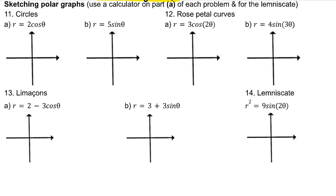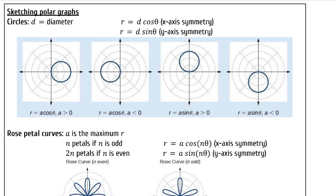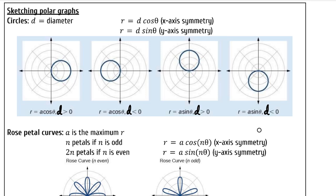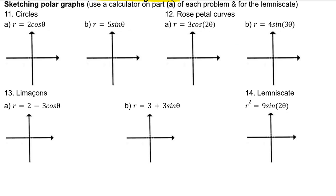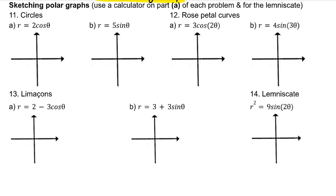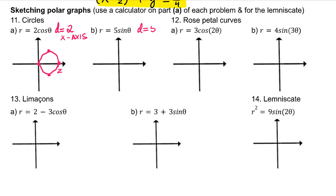Let's sketch some polar graphs. Some common polar graphs would be our circles. Our circles are r equals d cosine theta. If d is positive, your circle is going to be on the positive side of that axis. If d is negative, then your circle will be on the negative side of whichever axis you have symmetry on. And that is referring to d as the diameter of your circle. Use a calculator on part A of each problem. You're welcome to use a calculator. I'm going to show you how to do it by hand. 2 cosine theta. d, our diameter, is 2. And our axis of symmetry is the x-axis.